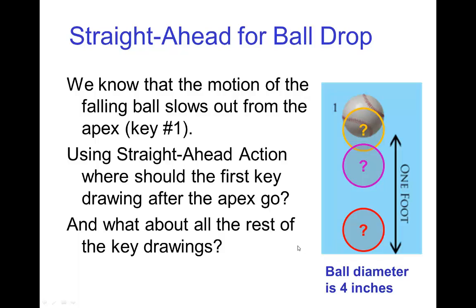If we're doing a straight-ahead animation of a ball drop and our first key is at the apex, we'd like to know, say if we're shooting on twos, two frames later where would the ball be? Would it be here or further down? Probably not as far down as this last one, but maybe a few frames later it would be down here. So we want to have some idea as to how quickly things fall.